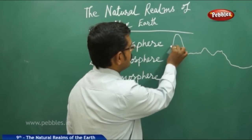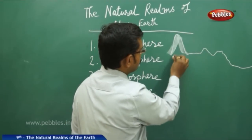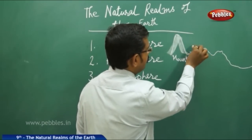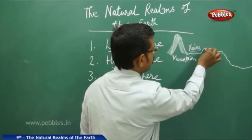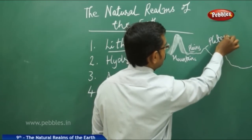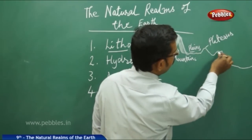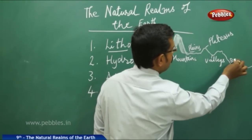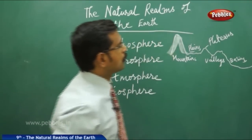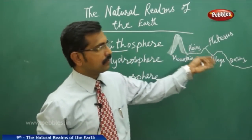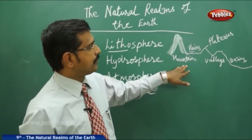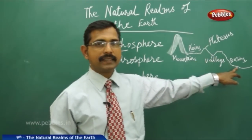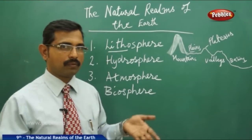So the lithosphere features include mountains, plains, plateaus, valleys, and deep basins. Valleys are where rivers flow along paths, and the huge basins are nothing but the oceans.